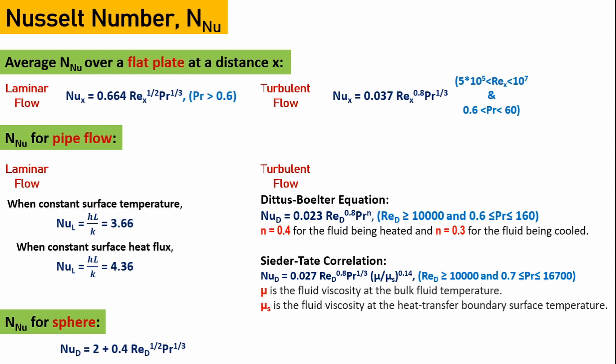For turbulent pipe flow, there are two well-known equations. The first is the Dittus-Boelter equation, which varies depending on whether the fluid is being heated or cooled. The second well-known equation is the Sieder-Tate correlation.